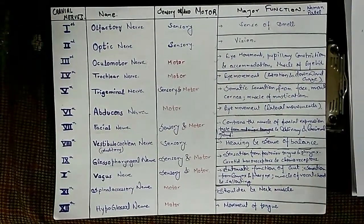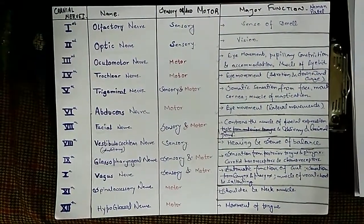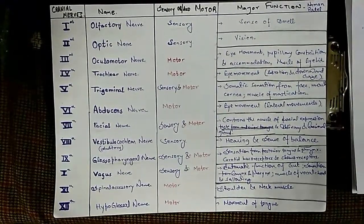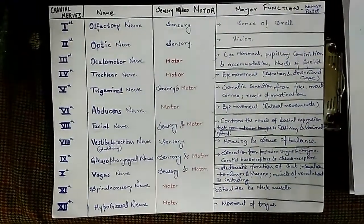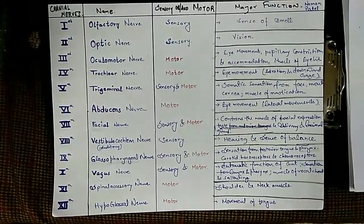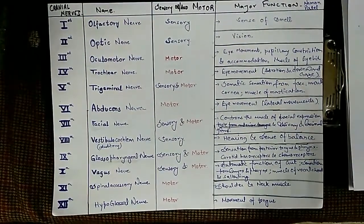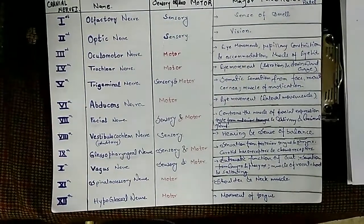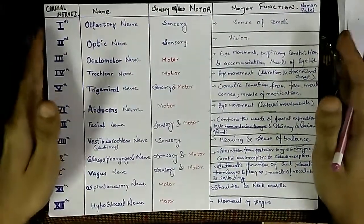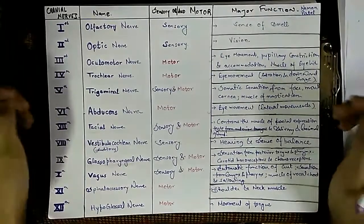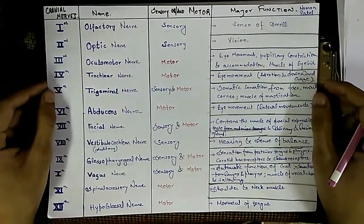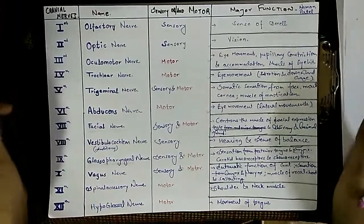The eleventh cranial nerve is the accessory nerve, a motor nerve that controls the muscles of the shoulder and neck. The twelfth is the hypoglossal nerve, also a motor nerve, and it is entirely concerned with movements of the tongue. That covers the introductory part of the cranial nerves; next we will discuss their origins.